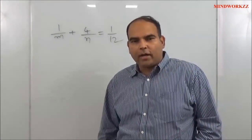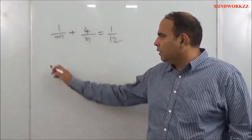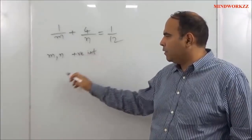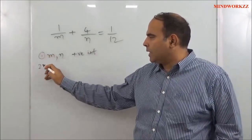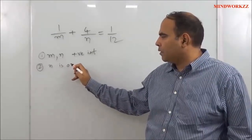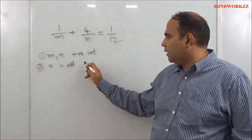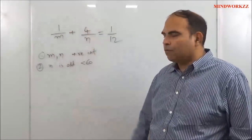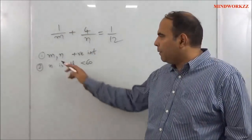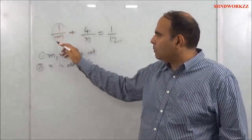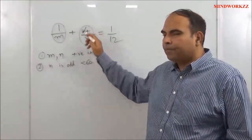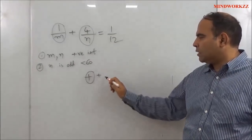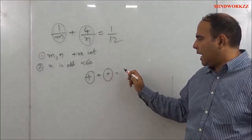importantly, along with reading that, you also read a couple more things: m and n are positive integers (first information), and second information: n is odd and less than 60. To conjunct this information with that information, what you realize is that if m and n are positive integers, both these expressions would be positive. And when you have positive plus positive adding up